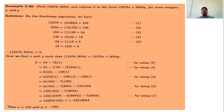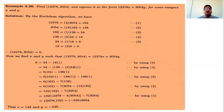The remainder is 162. The next step is to divide the divisor 3054 by the remainder 162. The quotient is 18 point something, so 18 is the quotient. Then 3054 minus 18 times 162 gives 138. Then divide 162 by 138 — the quotient is 1 and the remainder is 24.